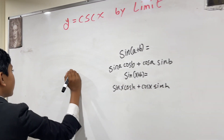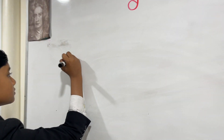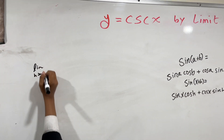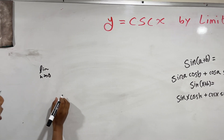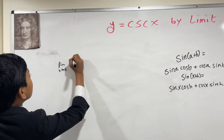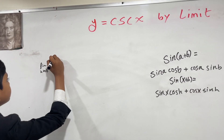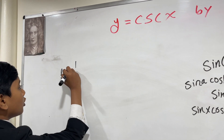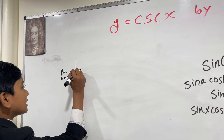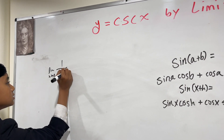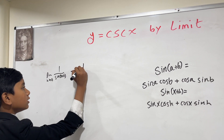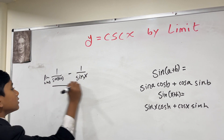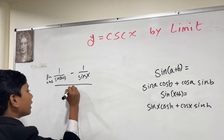So let's write that down. We know that the limit as h approaches 0 is one over sine(x + h) minus one over sine(x), all divided by h.